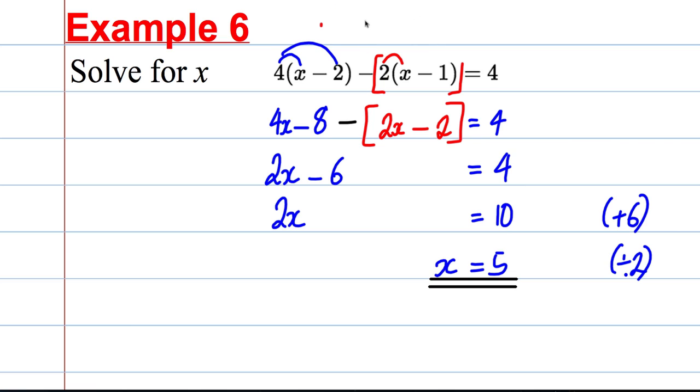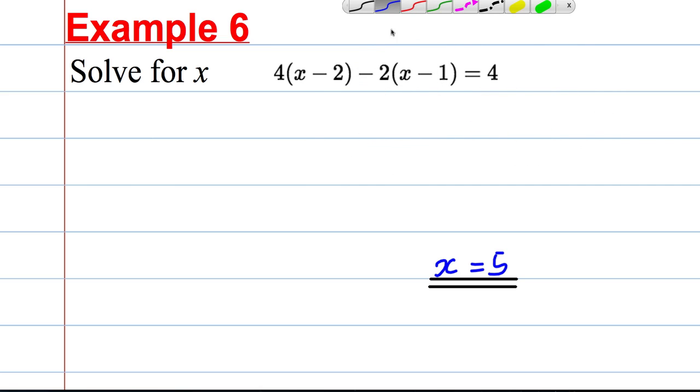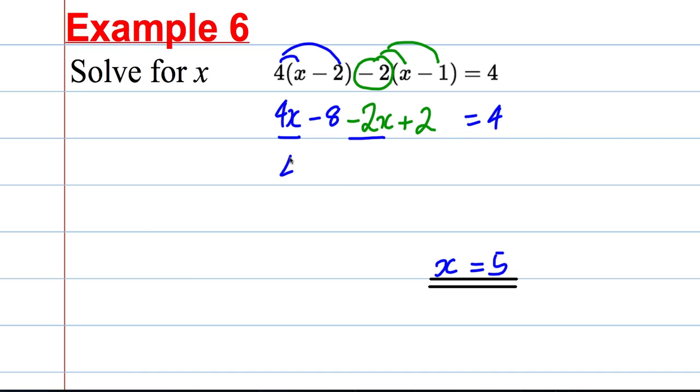Now this probably causes students a fair bit of difficulty here this sort of a question because of all the negatives going on. So I'm going to leave x is 5 as the final answer. I might just do it a different way. Sometimes it's done like this. Students might find this easier. Let's distribute this out here. 4x subtract 8 and sometimes students are told to think of that as negative 2 multiplying by both of these two things. So negative 2 times x is negative 2x. Negative 2 times negative 1 is plus 2 and that is equal to 4. Combining here again 4x subtract 2x is 2x and negative 8 add 2 is negative 6. And then you can add 6 to both sides so 2x must be 10 and therefore x must be 5. So whichever way works out for you that you prefer.